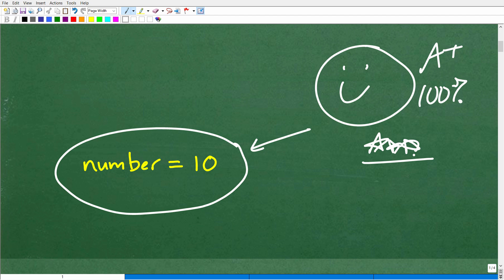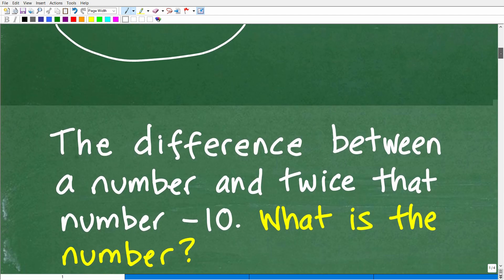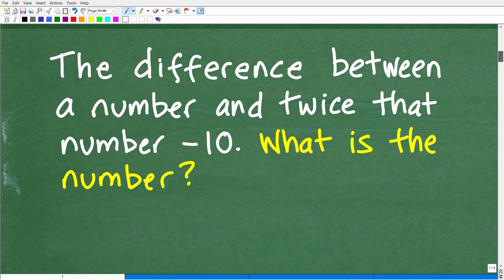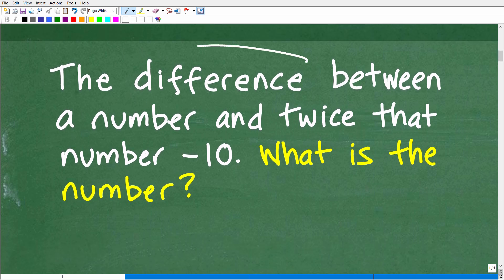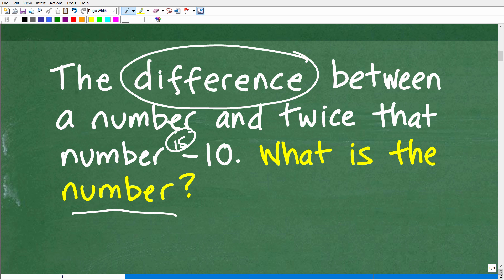But let's go ahead and get into this problem. And I kind of indicated in the beginning of this video that in order to do this problem, we need to understand this word right here. So the difference between a number and twice that number, really kind of a podge, I should have the word is right here, is negative 10. But what is the number? Well, we need to understand the difference.